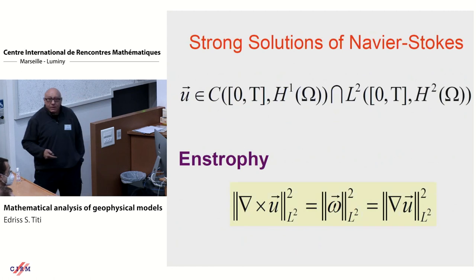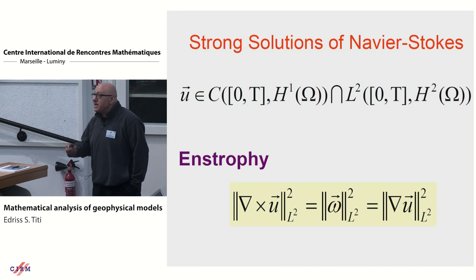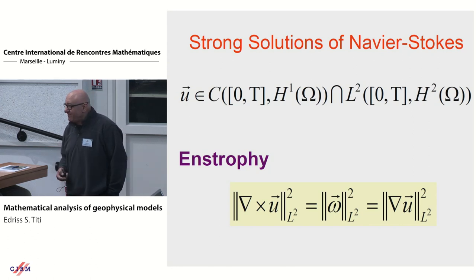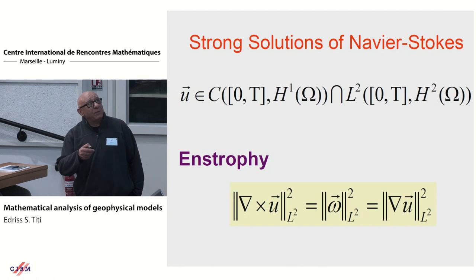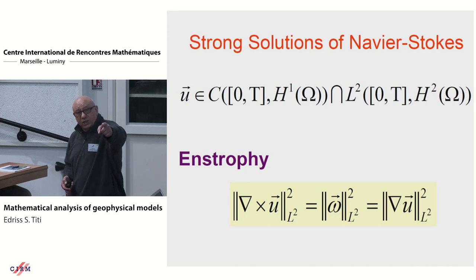What happens if you would like to talk about stronger solutions — namely that the initial data is smoother? I would like to look at what happens to the gradient of the velocity. Because of incompressibility, div u equals zero, so the L^2 norm of the gradient equals the L^2 norm of the curl. This quantity has a physical meaning — it's called the enstrophy. I would like solutions which are continuous in time with values in H^1, or L^2 in time with values in H^2. This is much stronger.